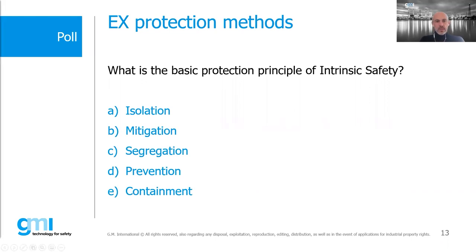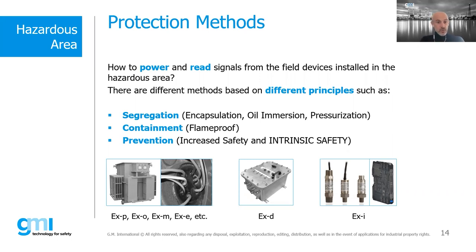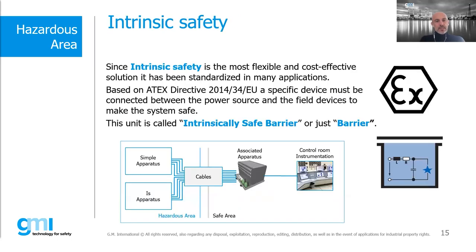Regarding protection methods: how do you power and read signals from field devices installed in hazardous areas? There are different technologies. Segregation involves hardware that is encapsulated, immersed in oil, or pressurized in cabinets. Containment involves flameproof boxes — large aluminum enclosures. Then there is the protection method of increased safety and intrinsic safety. Intrinsic safety has less impact on systems because it prevents energy at the source — it is very flexible and cost-effective compared to other technologies.